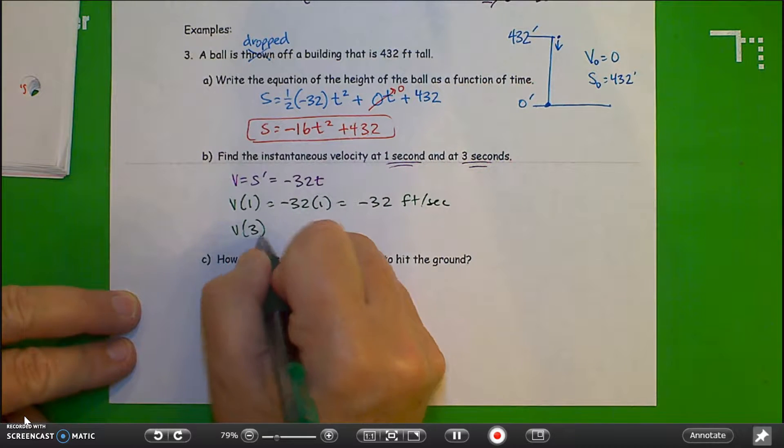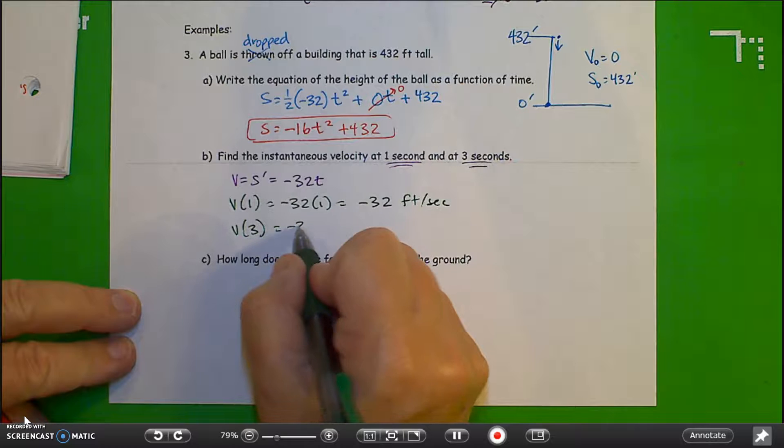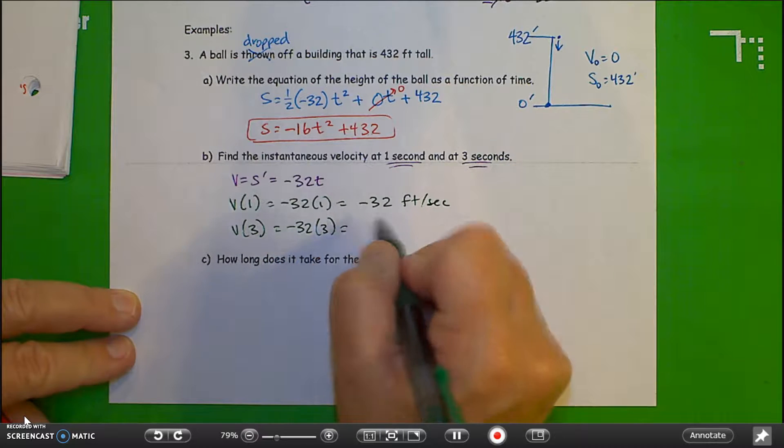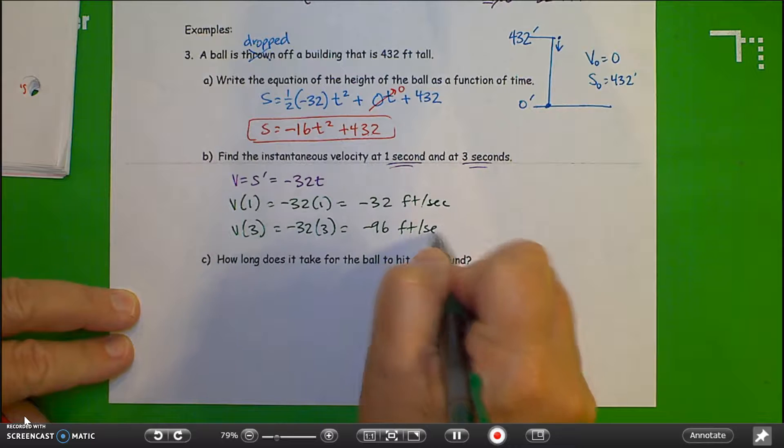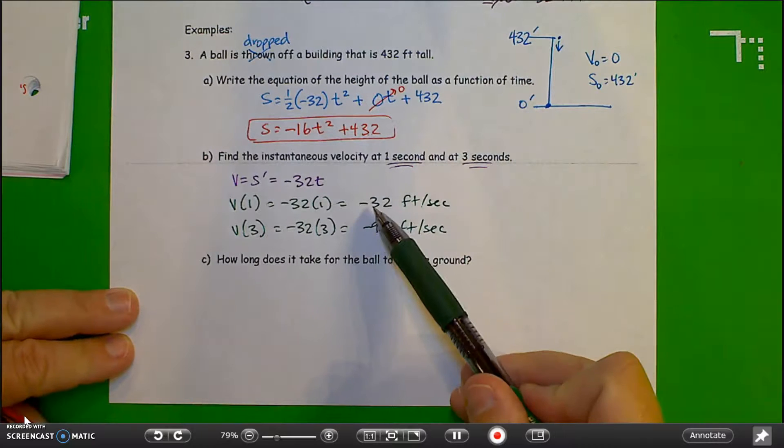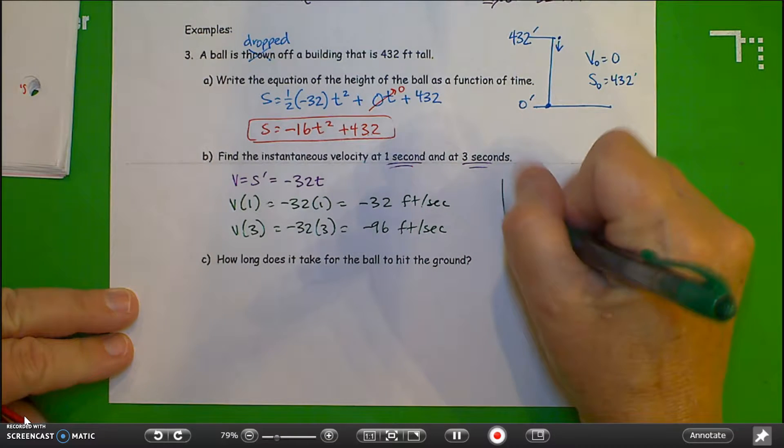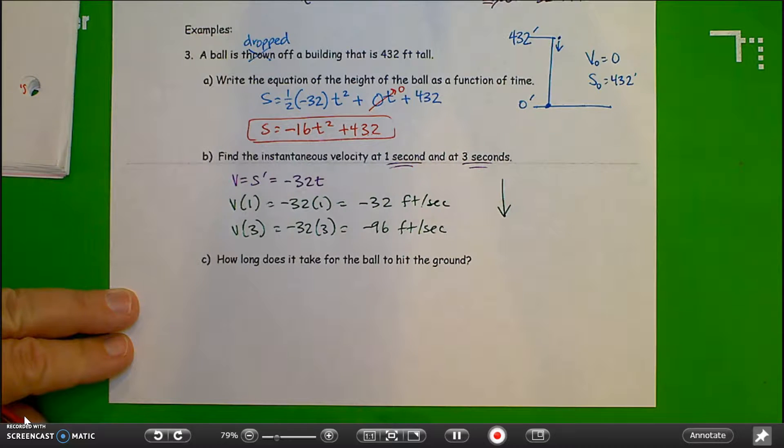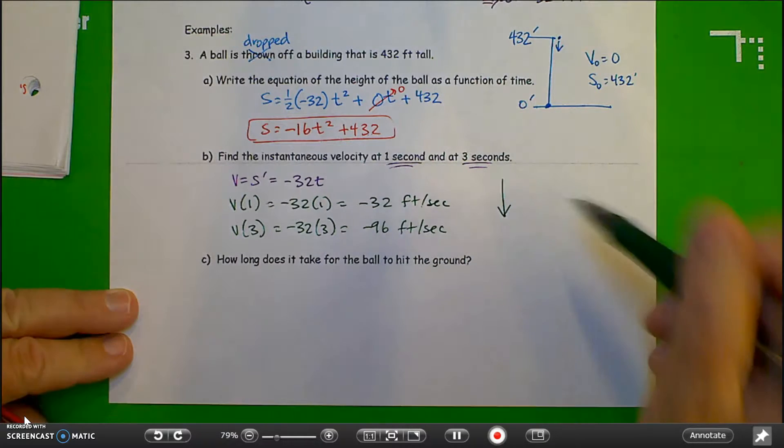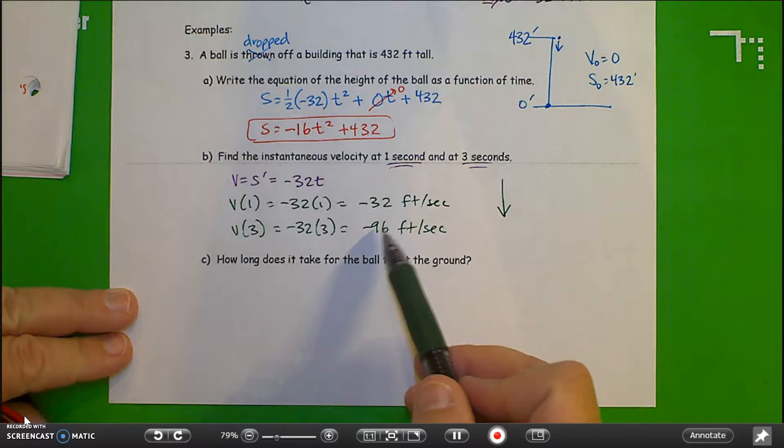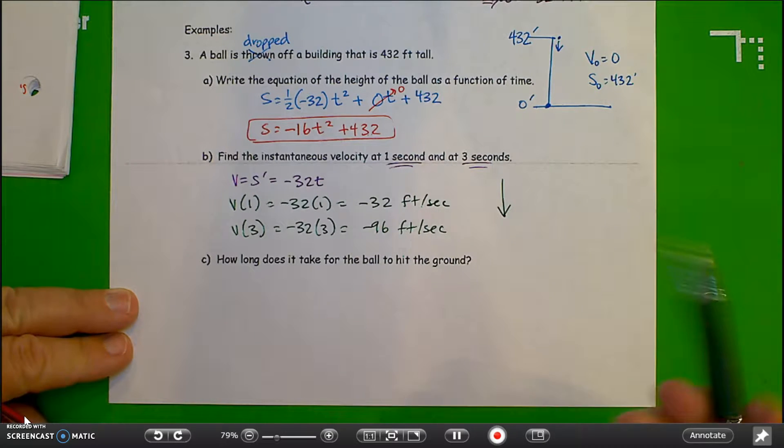Velocity at three seconds is negative 32 times three, or negative 96 feet per second. They're negative because the ball is headed downward. Down is negative. And it's speeding up because of the force of acceleration due to gravity.